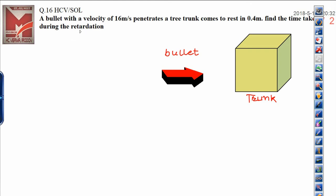Dear student, this is question number 16 from SC Verma. A bullet with a velocity of 16 meters per second, let this is the initial velocity of bullet which is 16 meters per second.